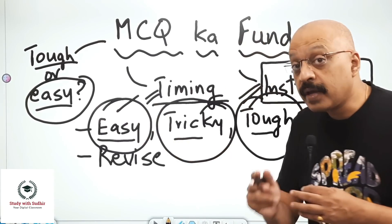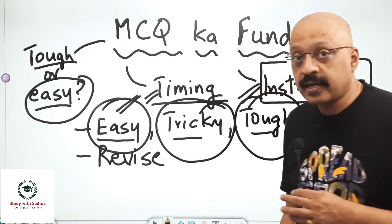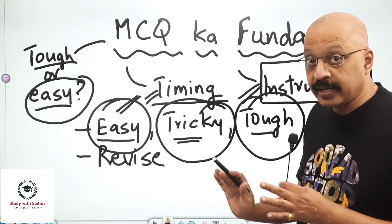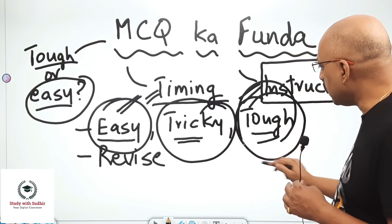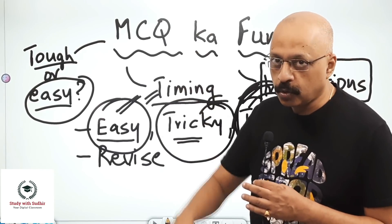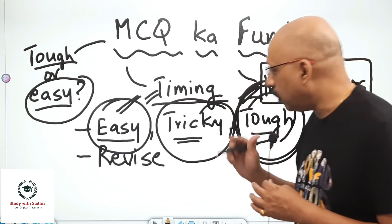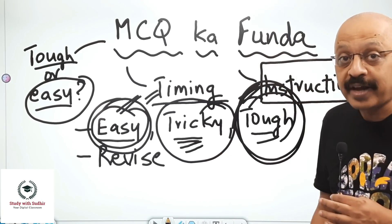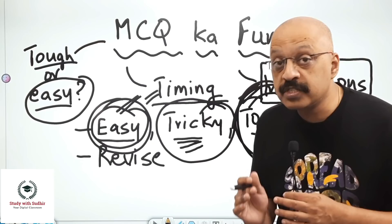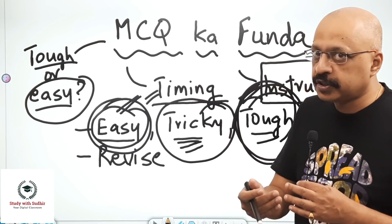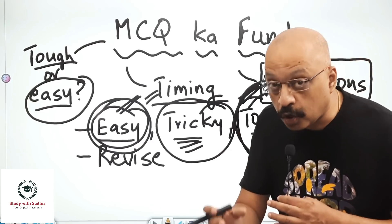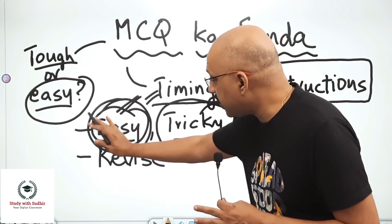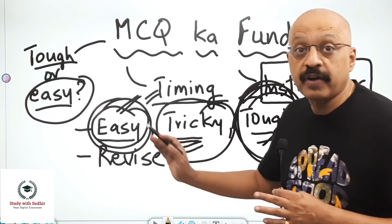Answer the easy ones immediately. If those questions are more than 90%, you will be able to manage a good 90%. Once you deal with the easy questions, spend a considerable amount of time on the tricky questions and do them very carefully. Do not make any mistake — think about whether it's option A or option C, option B or option C — think logically and then arrive at an answer. The tough ones, devote time at the end. I am assuming you will take care of 75 to 80% of the question paper.